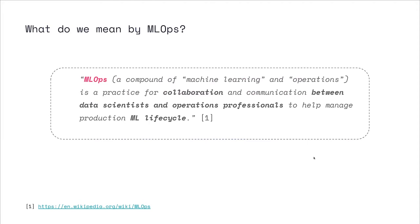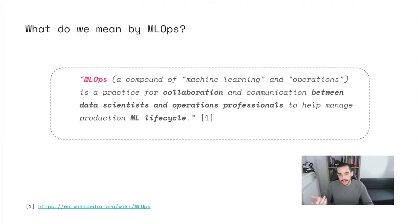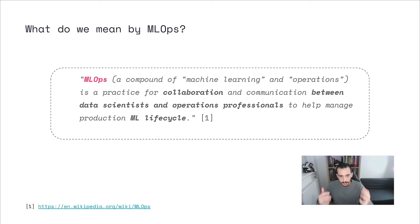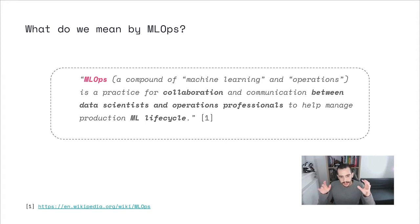Another way to put it — according to Wikipedia, and I know you shouldn't quote Wikipedia, but I really like this definition — MLOps is a practice for collaboration and communication between data scientists and operations professionals to help manage the production machine learning lifecycle. Everyone wants that larger machine learning lifecycle for their models. However, as we mentioned before, this problem is hard.